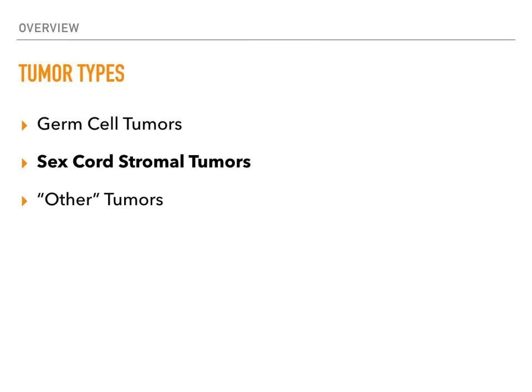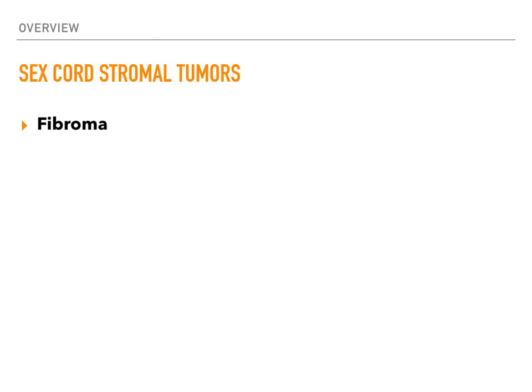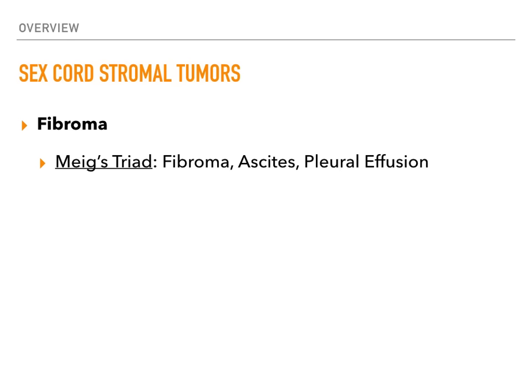Now we're switching gears to talk about sex cord stromal tumors. The first type is a fibroma, and there's a really high-yield syndrome called Meigs triad. That triad consists of a fibroma, ascites, and a pleural effusion.